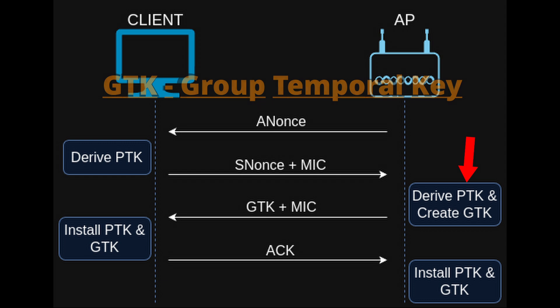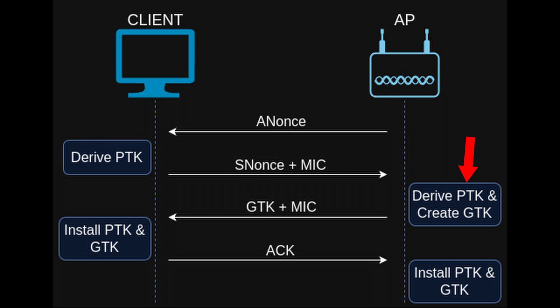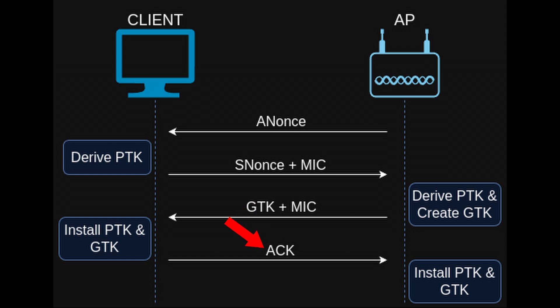The GTK is shared between all devices on the network and is used for broadcast and multicast traffic. It is sent over in the third message alongside another MIC. Finally, the client sends an ACK saying that everything is okay and it's ready to use encryption.